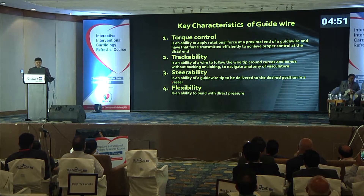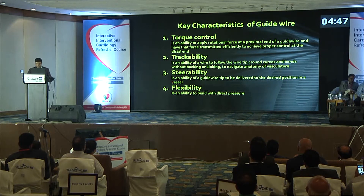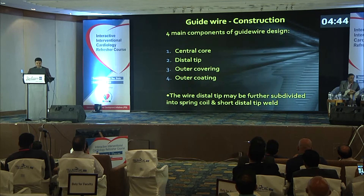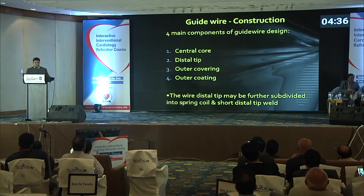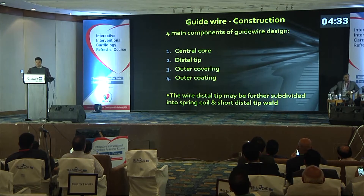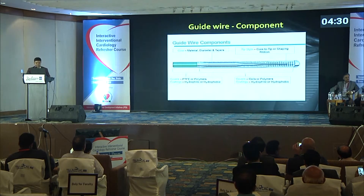The key characteristics of guide wire are four main properties: torque control, trackability, steerability, and flexibility. These characteristics depend upon the construction material and design. The four main components are: central core, distal tip, outer covering, and outer coating.